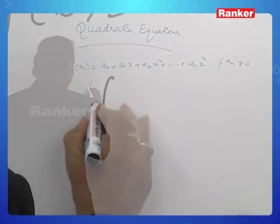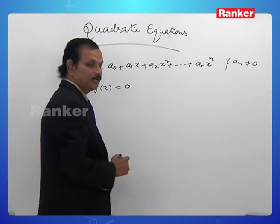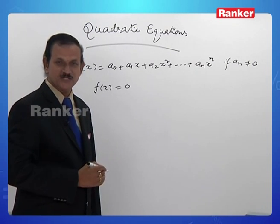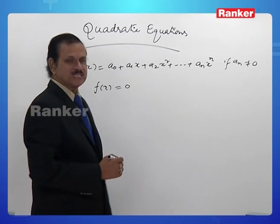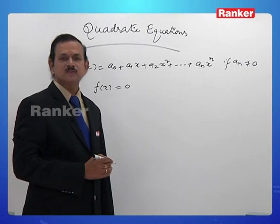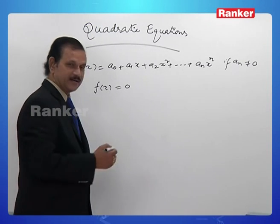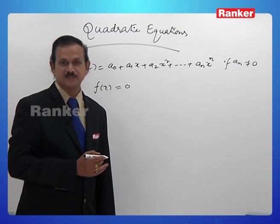Moreover, if we take f(x) equal to 0, then it is called a polynomial equation. Of special interest is the case to deal with quadratic equations.